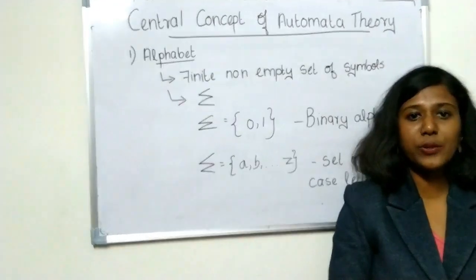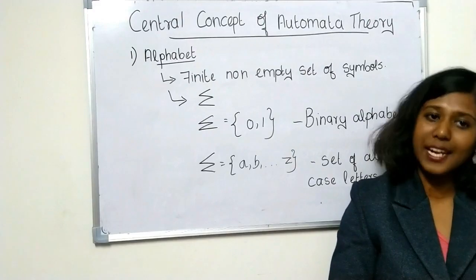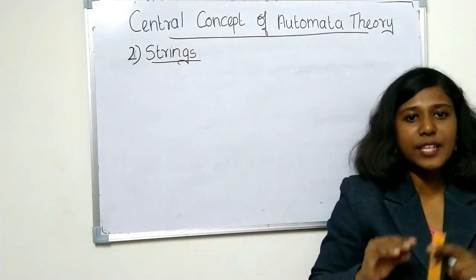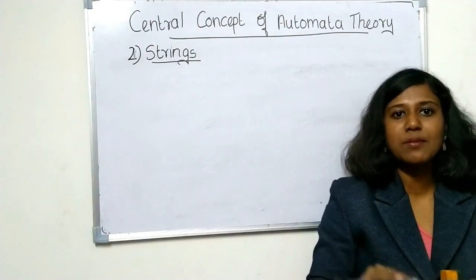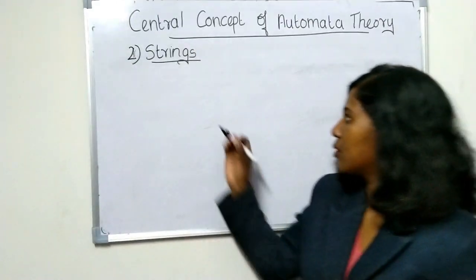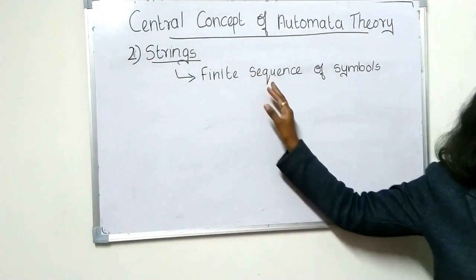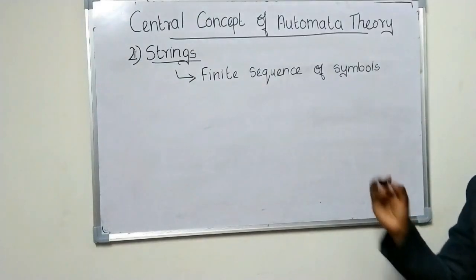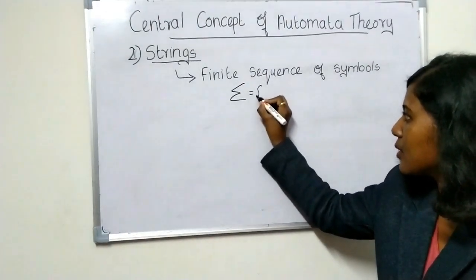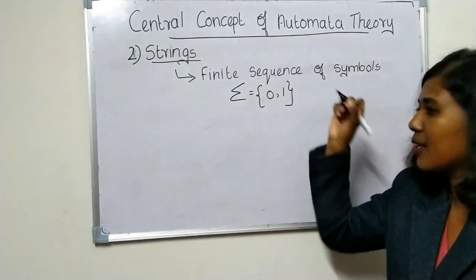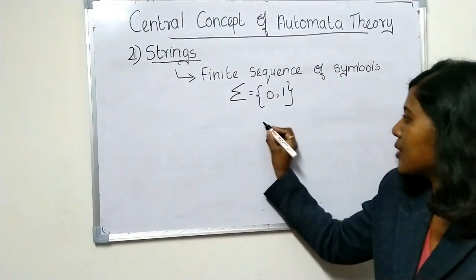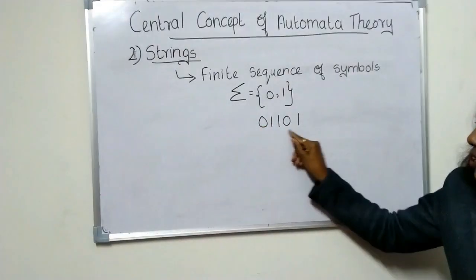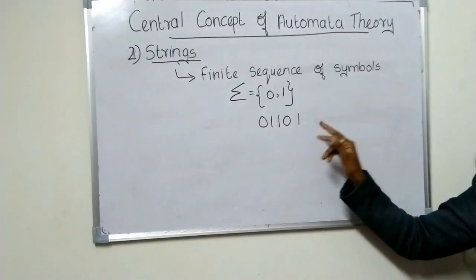Now we are going to discuss the second central concept of Automata Theory: Strings. A String is a finite sequence of symbols chosen from some alphabet. For example, taking the Binary Alphabet where Sigma equals {0, 1}, a string like 1,1,0,1 is a sequence of symbols — that is a String.